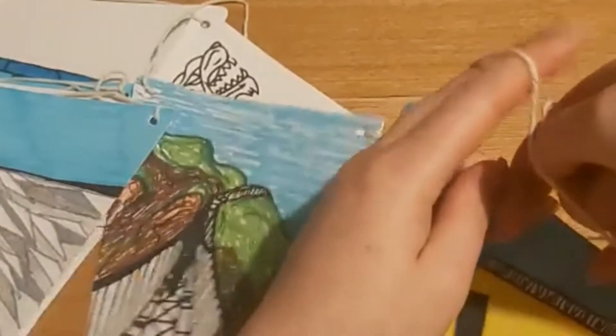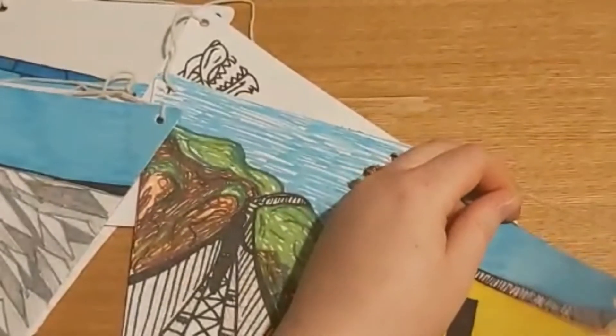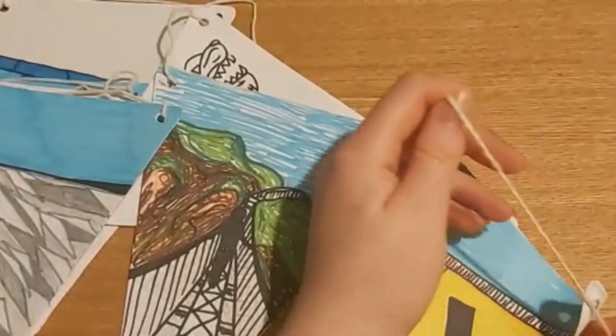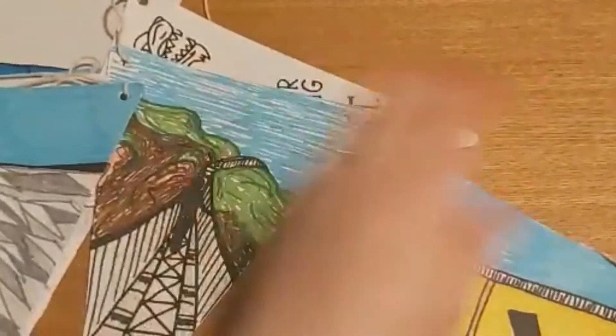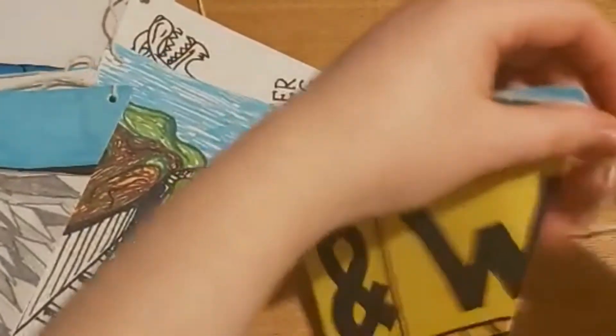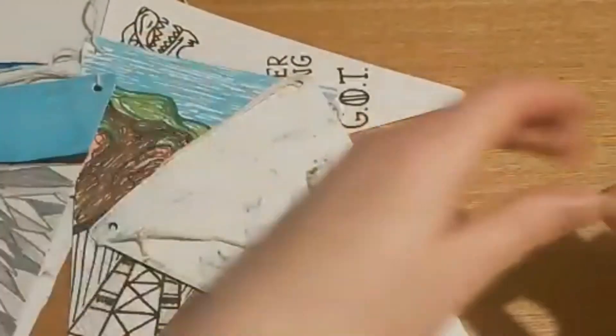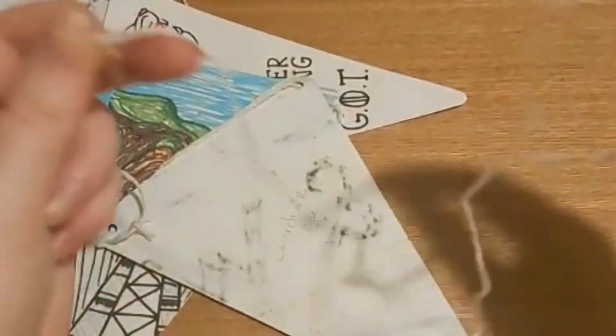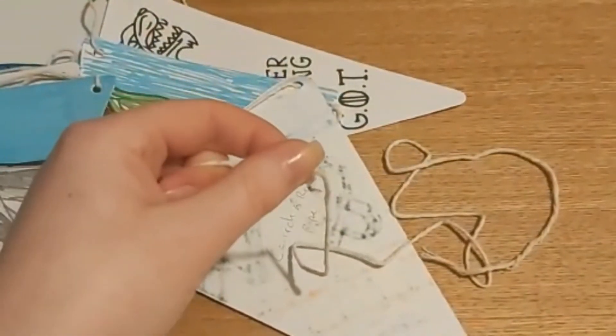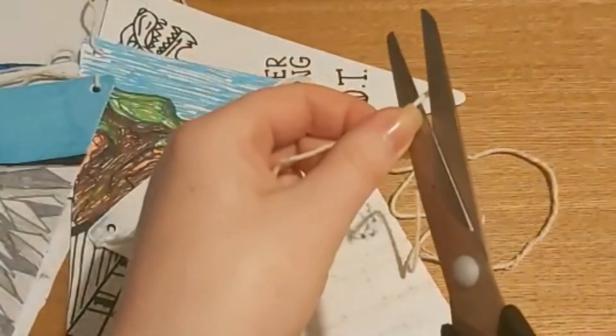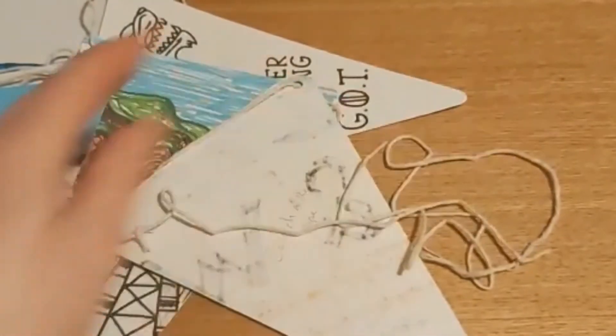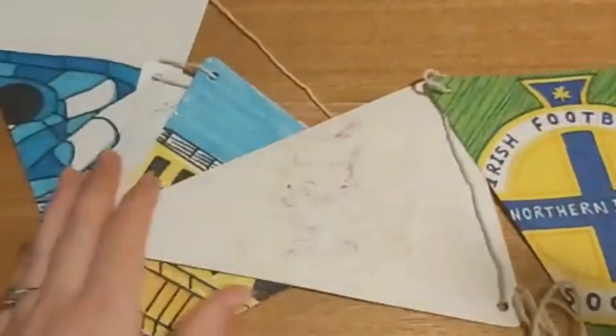So just do like a simple wee loop just like that and then I'm just going to cut. I'm going to keep a wee bit of string on this side but I'm going to cut off all the excess so I don't have too much, just so there isn't loads hanging down, just like this. And there we go, they should all be connected like this and we're going to go stick it up and see what it looks like.